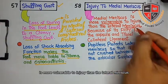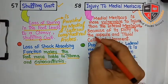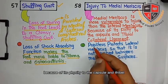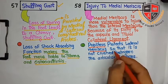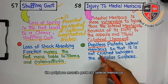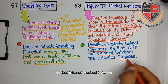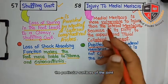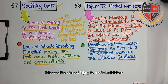The next clinical is injury to the medial meniscus. The medial meniscus is more vulnerable to injury than the lateral meniscus because of its fixity to the capsule and tibial collateral ligament. The popliteus muscle protects the lateral meniscus so that it is not crushed between the articular surfaces of the joint.